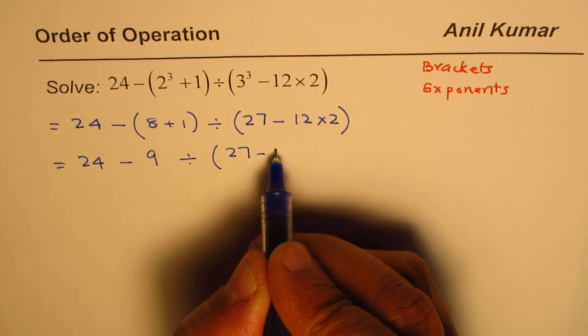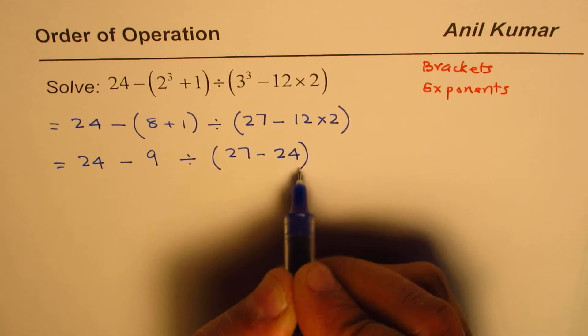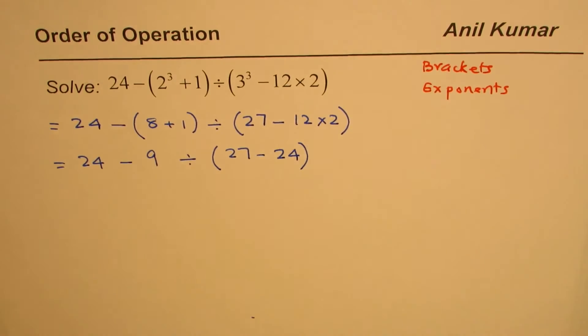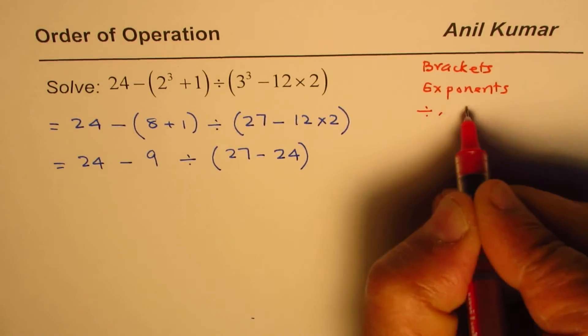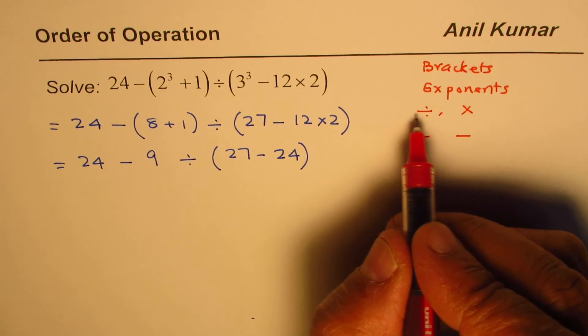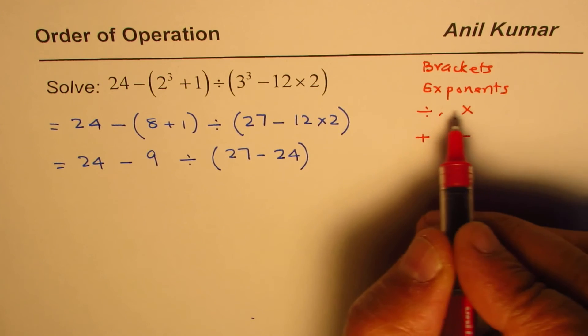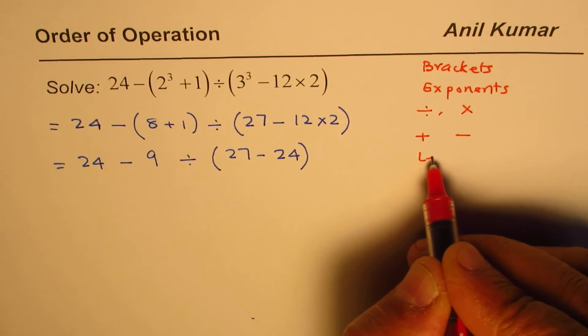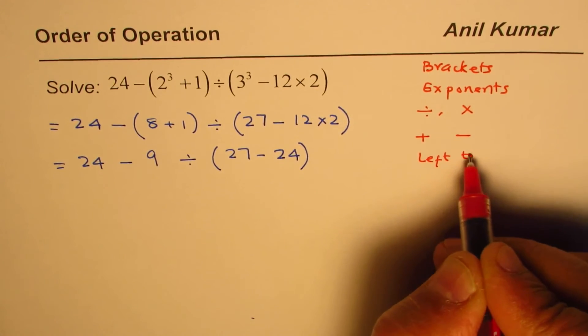After this, the choice is division and multiplication and then we have addition and subtraction. Division and multiplication are at the same level, we have to go from left to right. That is how we should be doing it.